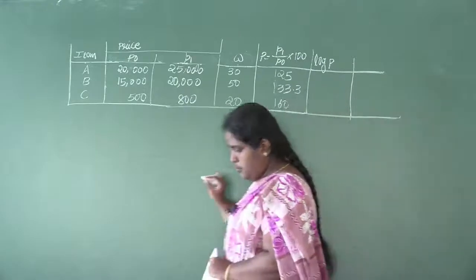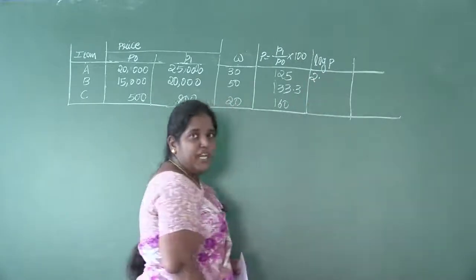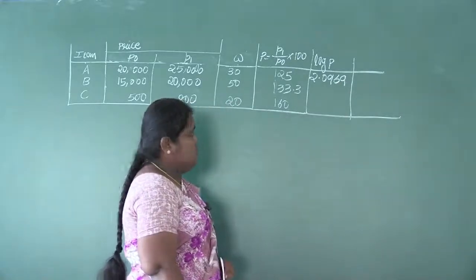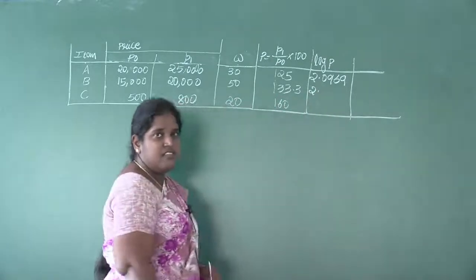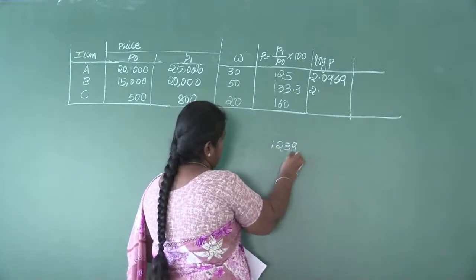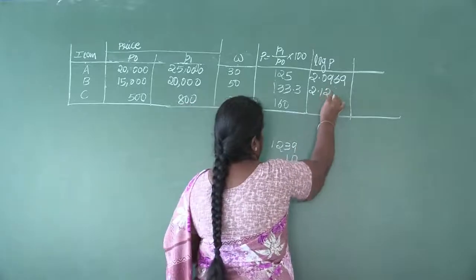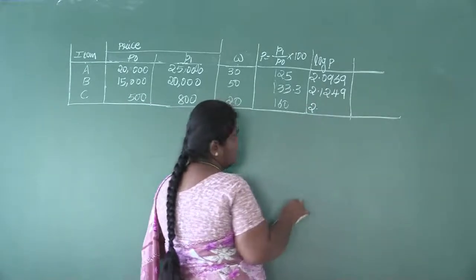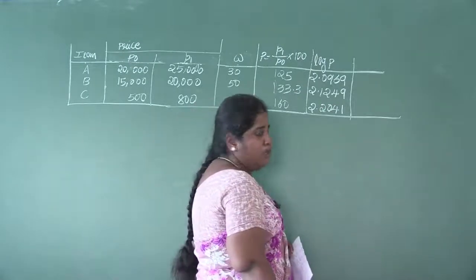Now find log P. For 125: three-digit number, characteristic 2. Table value for 12 under 5 is 0969, so log 125 = 2.0969. For 133.3: three-digit, characteristic 2. Table value for 13 under 3 is 1239; mean difference 3 is 10, so 1239 + 10 = 1249, giving log 133.3 = 2.1249. For 160: three-digit, characteristic 2. Table value for 16 under 0 is 2041, so log 160 = 2.2041.